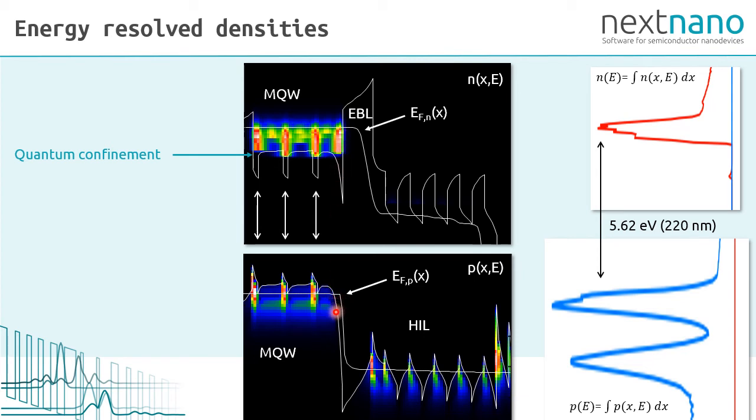We can see the effect of the height of the electron blocking layer, which does not allow the electrons to penetrate into the right. This thin white line is the quasi Fermi level for the electrons. This thin white line is the quasi Fermi level for the holes, also seen here. The position of the Fermi level determines the occupation of the quantum mechanically calculated electron and hole eigenstates.